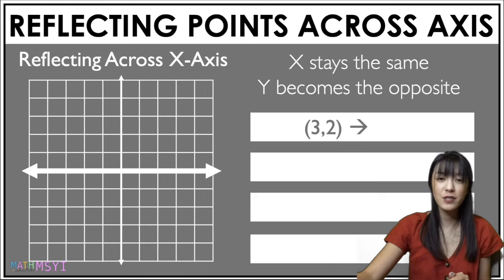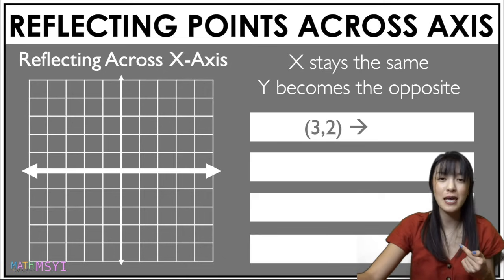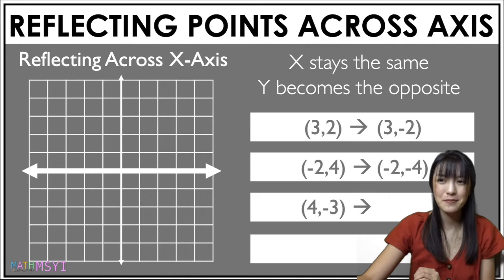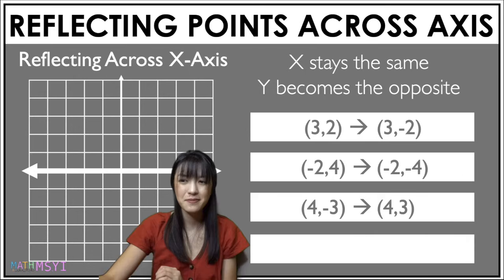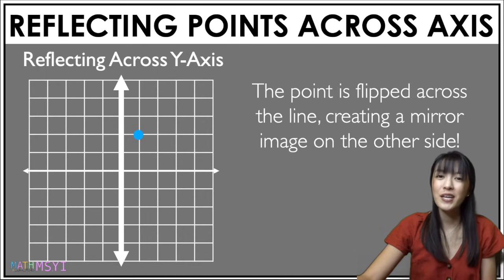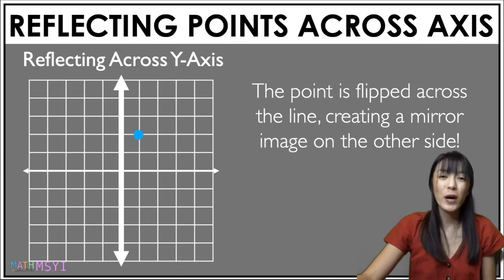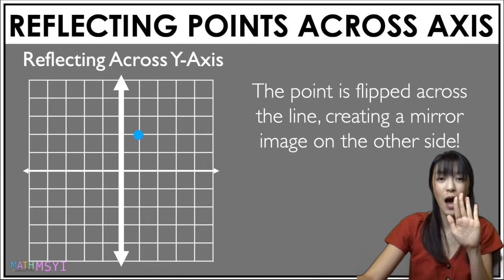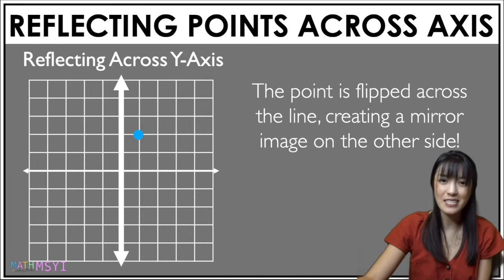Pause if you need to — I'm just going to click through these examples, so if you need some time, just pause the video. Now let's look at reflecting across your y-axis. When you're reflecting across your y-axis, your x value becomes the opposite and your y value stays the same.